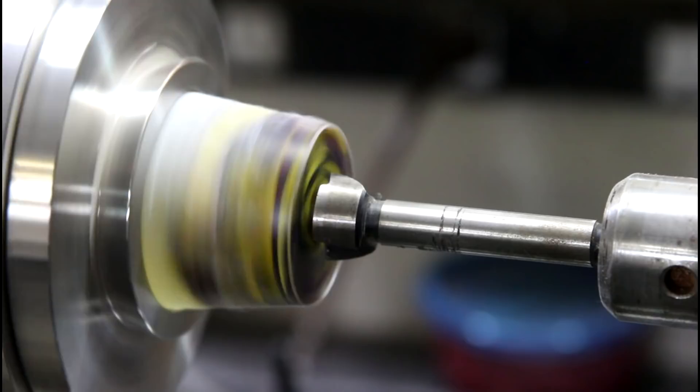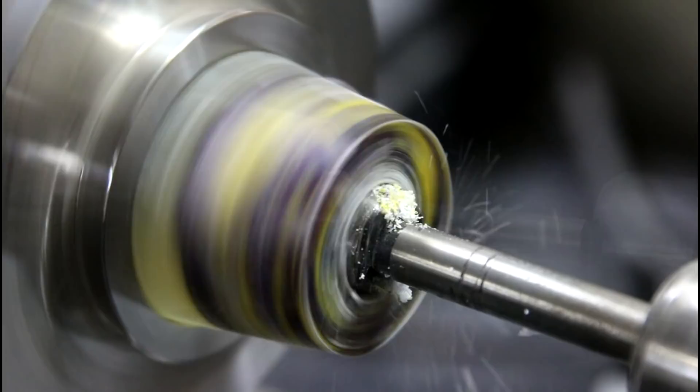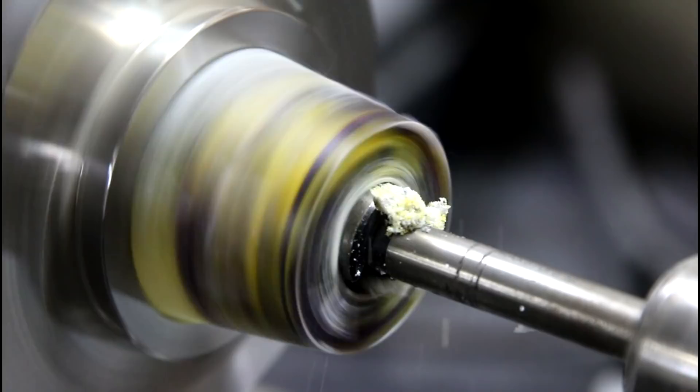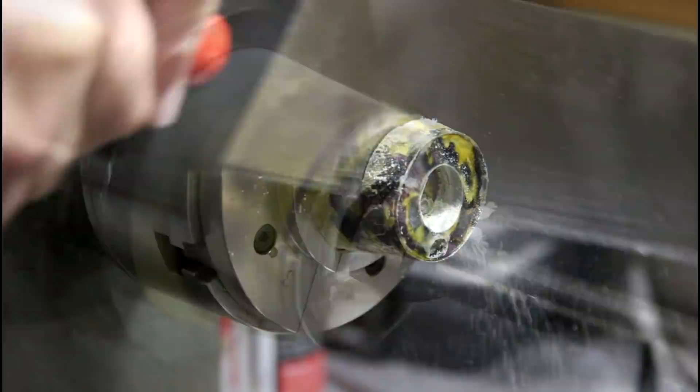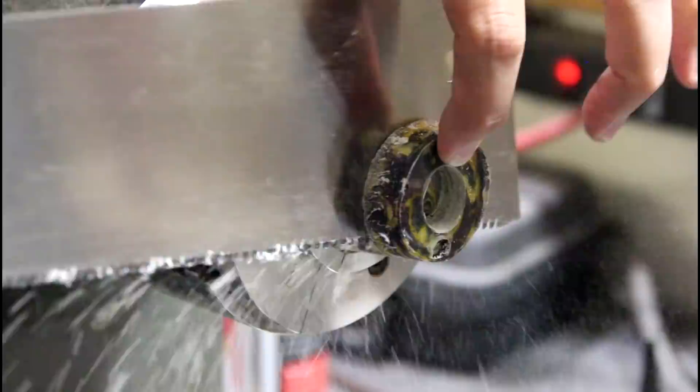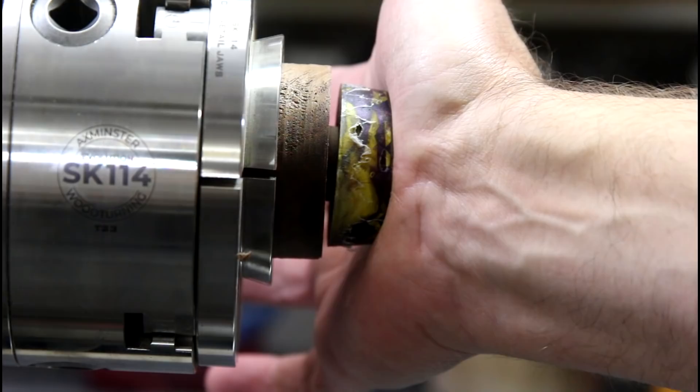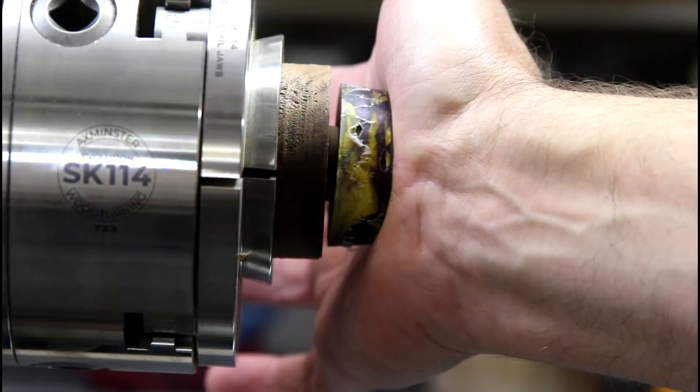Oh these chuck jaws are made for Dixie cups, that's perfect. And this is what I used to do turn rings with. It's basically just a piece of wood that I've turned a small tenon on. It's called a jam chuck.